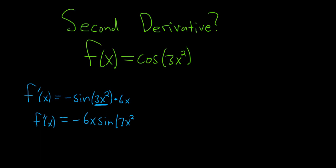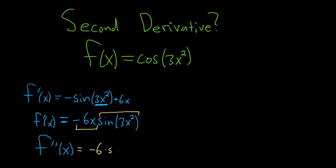Now we have to find the second derivative, so we have to do it again — f double prime of x. We're going to use the product rule. The product rule says we have to think of it as the first function and the second function. Negative 6x is our first function. So it's the derivative of the first, which is negative 6, times the second, which is sine of 3x squared.